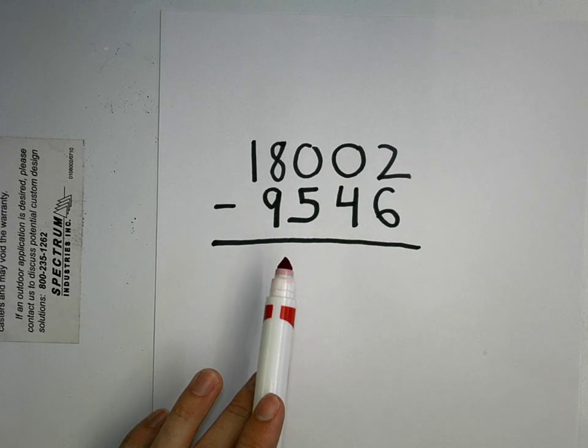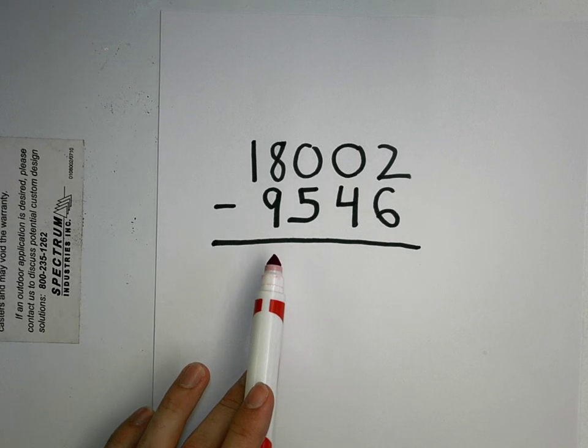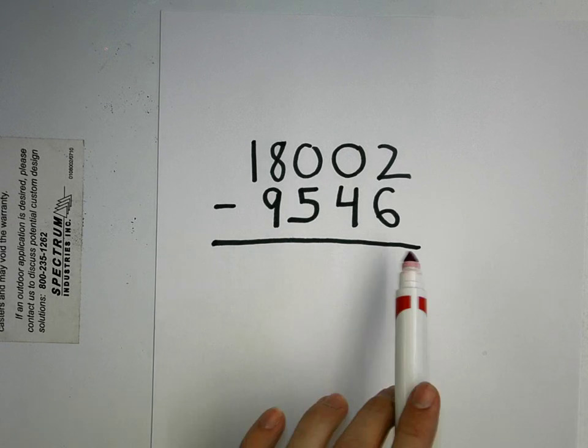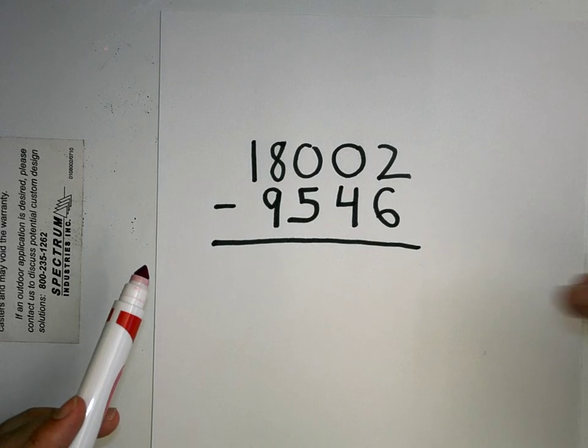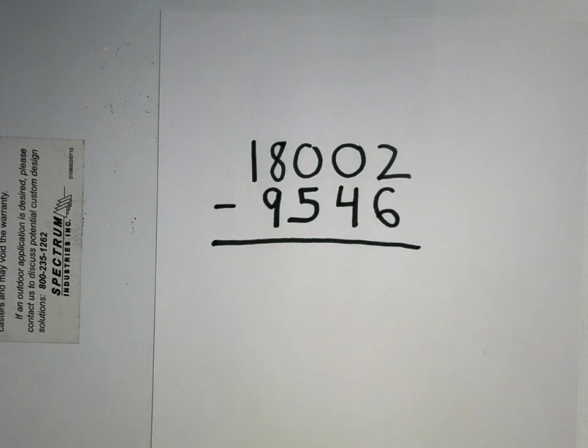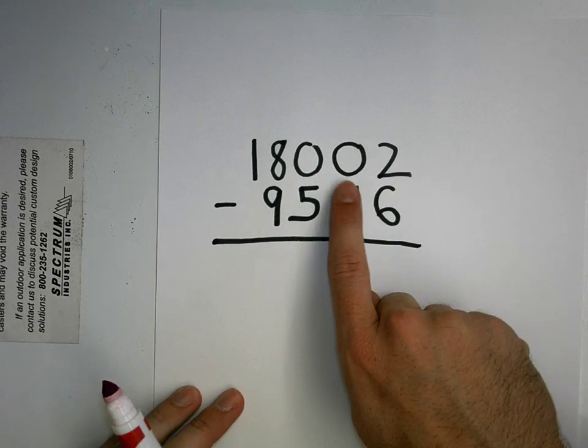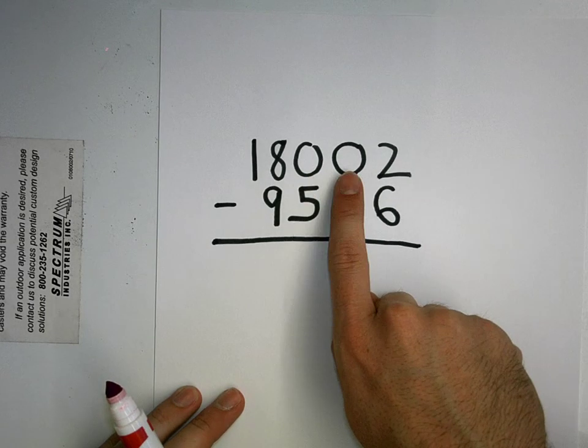...hundreds, and even thousands place, you will see that this number has digits that are higher than the number on the top, so we might have to regroup a couple of times. And if you see, we have a couple of zeros we might have to regroup across.